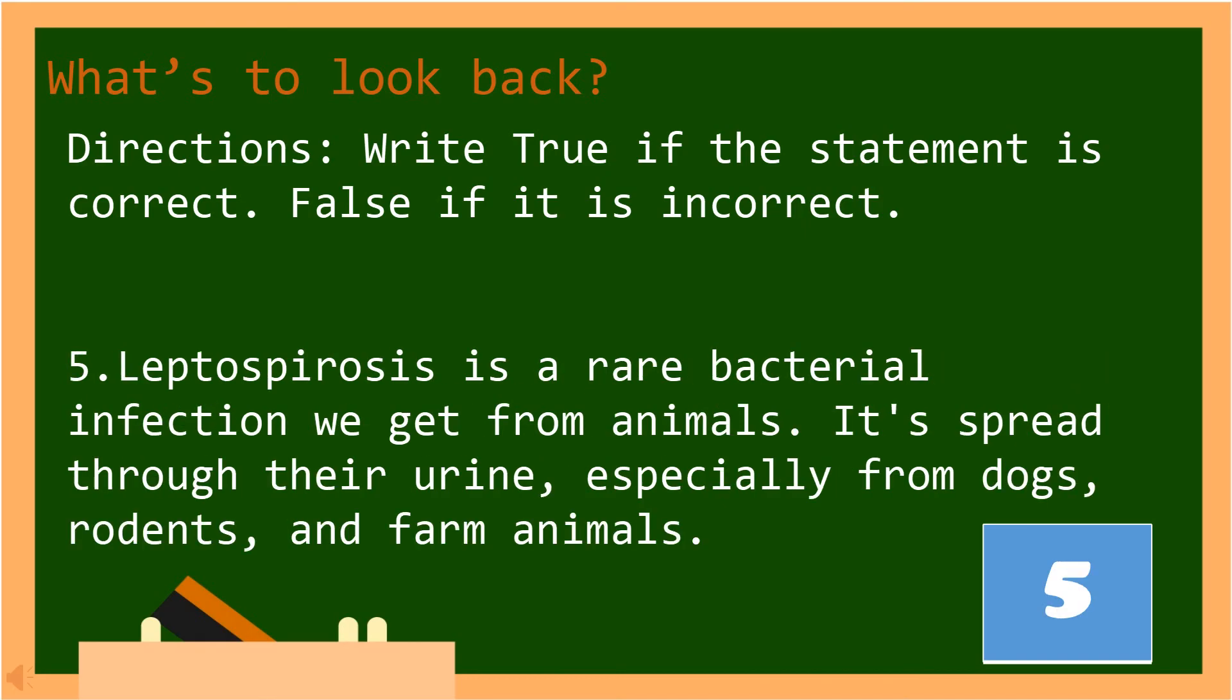For number 5, Leptospirosis is a rare bacterial infection we get from animals. It's spread through the urine, especially from dogs, rodents, and farm animals. Is it true or false?